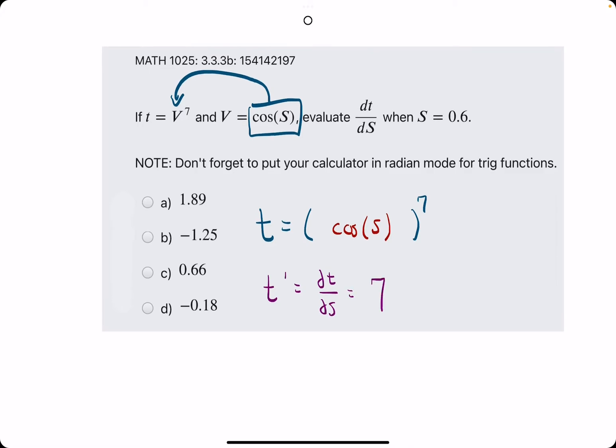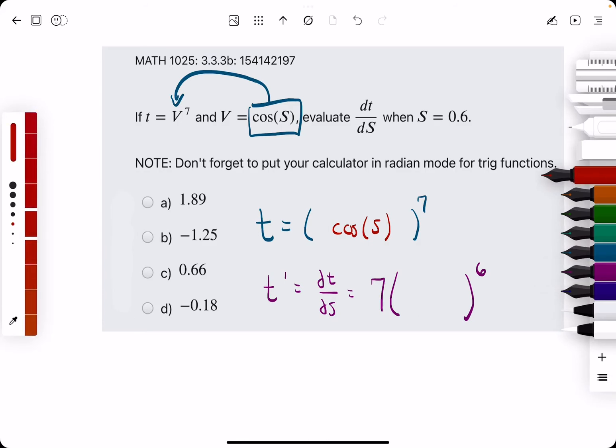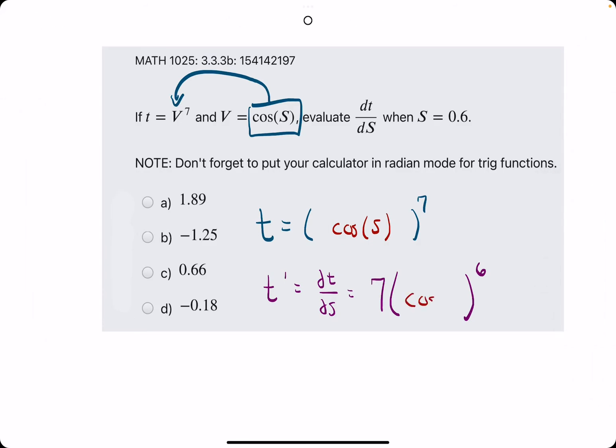The outside layer, the 7, comes out in front, and then the exponent becomes a 6. And again, the inside layer stays the same when we find the derivative of the outside. So, that's the outside derivative.